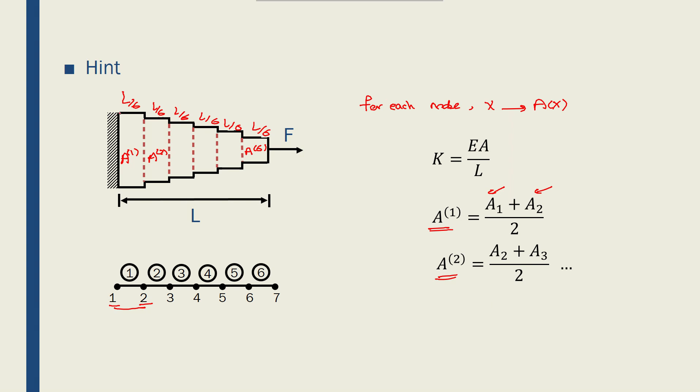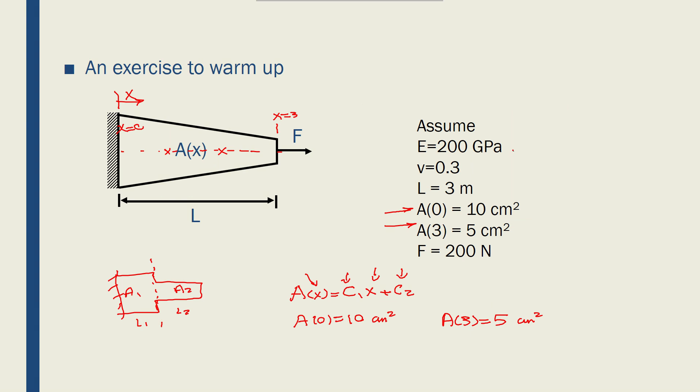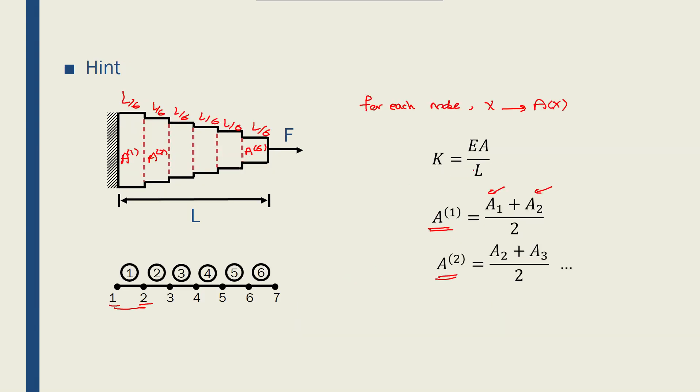Now I have the Ls, which are L over 6, and the E, which is constant given here, 200 gigapascals. I can find the stiffness for each of the elements from an equation like that. I just have to put the corresponding element cross sections and lengths here.